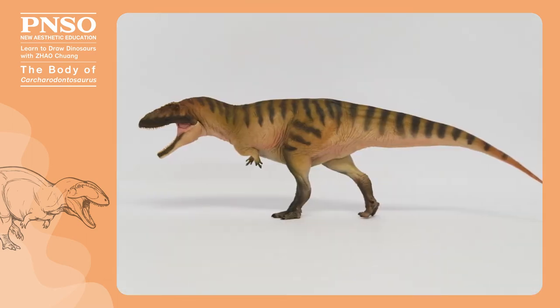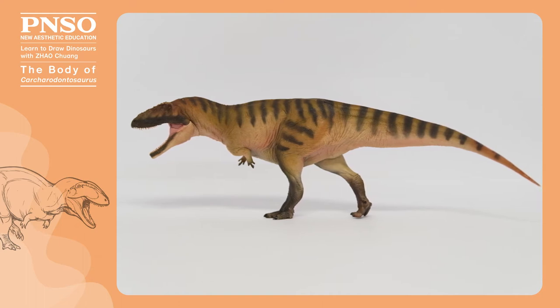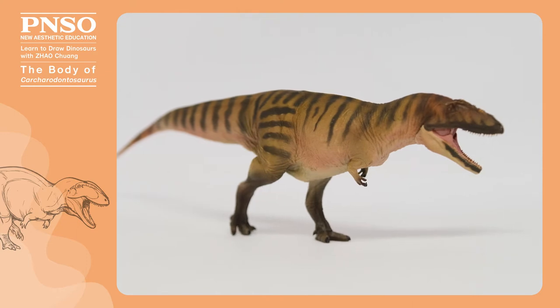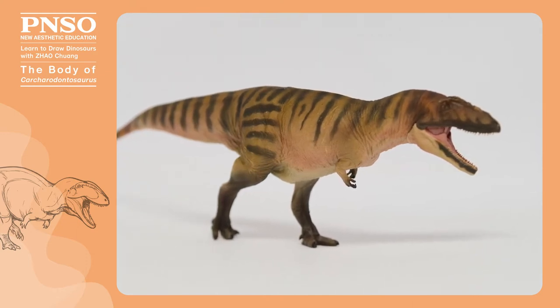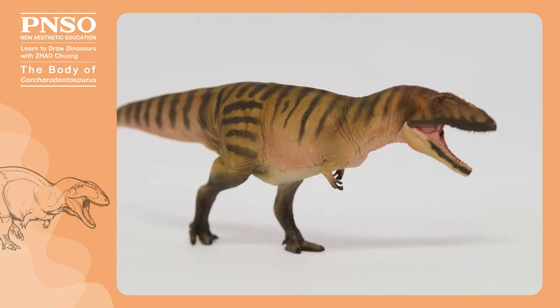When drawing the body of Carcharodontosaurus, we need to pay attention to the proportion of each part, especially its head was large. If we draw a Carcharodontosaurus walking toward the audience because of the perspective relationship, we may need to draw its head bigger and the other parts far away smaller.